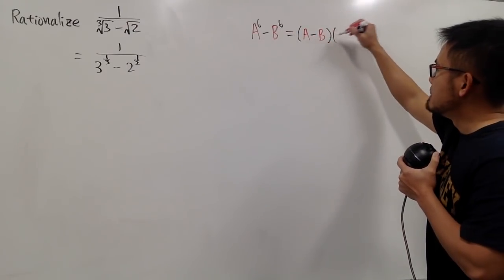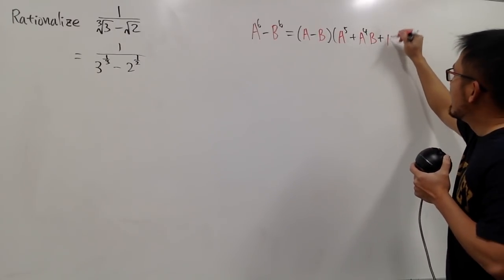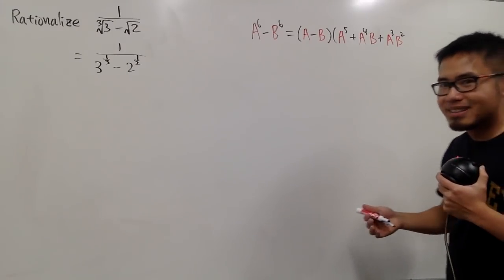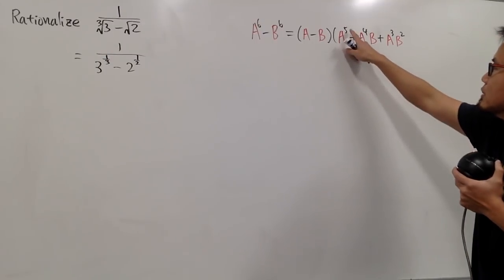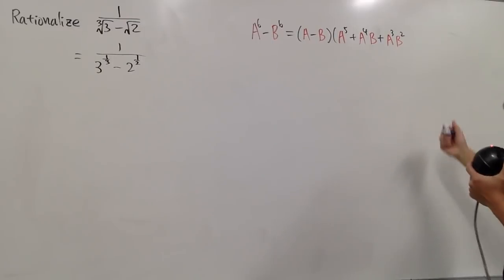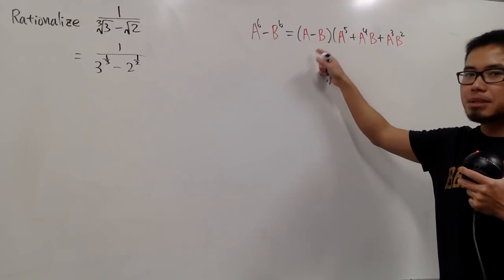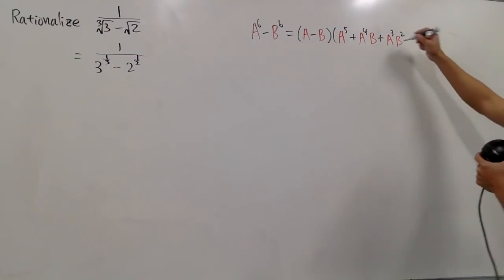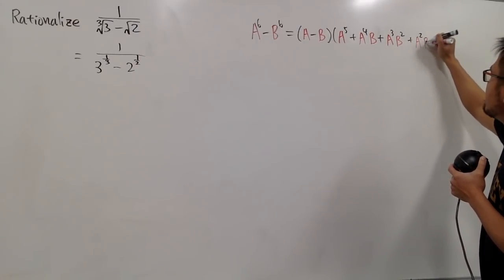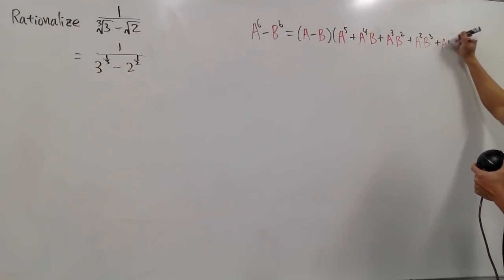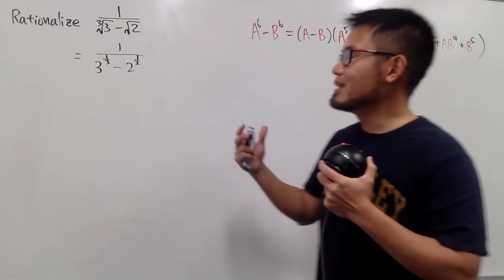To factor a⁶ minus b⁶, we get (a minus b) times (a to the 5th plus a to the 4th times b to the 1st, plus a to the 3rd times b to the 2nd, plus a squared times b to the 3rd, plus a to the 1st times b to the 4th, plus b to the 5th). The pattern: powers of a go 5, 4, 3, 2, 1, 0 and powers of b go 0, 1, 2, 3, 4, 5. This is pretty much like the conjugate strategy — similar to when we have two terms in the denominator with square roots. We have (a minus b) already, so we multiply by that second factor.